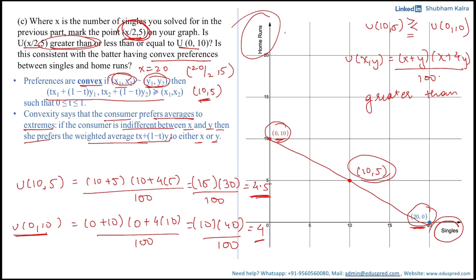You can also verify this mathematically: if you take t = 0.5, giving equal weight to both bundles, half of the bundle 20 comma 0 gives 10 comma 0, and half of bundle 0 comma 10 gives 0 comma 5. Adding both halves together gives 10 comma 5, confirming that 10 comma 5 is the weighted average bundle when t = 0.5.